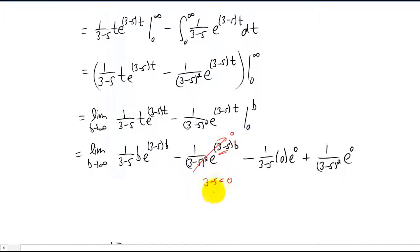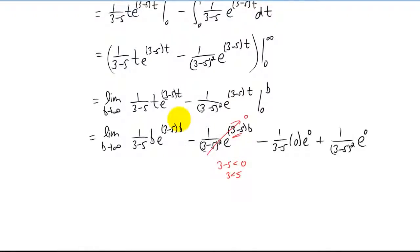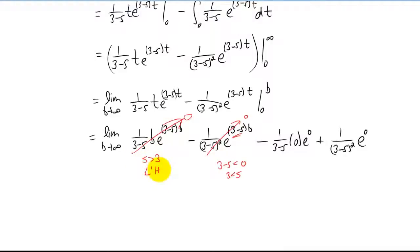Another way to say that is three is less than s, or s is greater than three. The limit of this term here is also going to be zero. That's slightly more complicated, and we did one like it in class. It requires that s has to be greater than three as well, and we also had to use L'Hôpital's rule to do that limit.